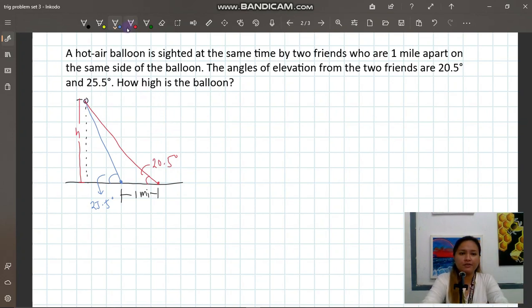Again, we are looking for this one, the height of the balloon. From the illustration, we can generate or we can at least observe that we have drawn triangles. Again, triangles - it's more than one triangle. Basically, we need to apply the concept of trigonometry, basic trigonometry, to solve this problem.